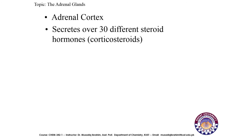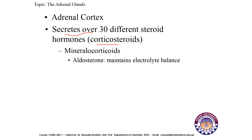The adrenal cortex secretes over 30 different steroid hormones, collectively known as corticosteroids. There are different types secreted from different regions. The first type is mineralocorticoids, secreted by the outer zone of the adrenal cortex — the zona glomerulosa. The example of a mineralocorticoid is aldosterone, which maintains electrolyte balance.